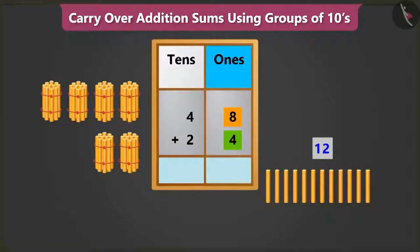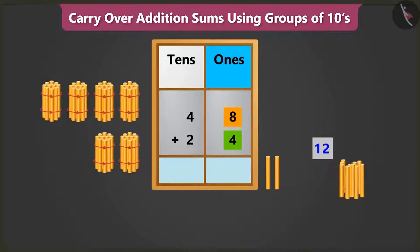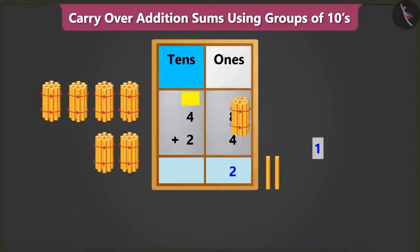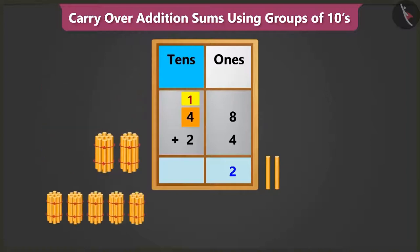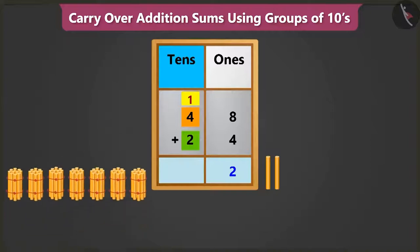Yes. So, from 12 ones, we will write 2 in the ones box and carry over 1 tens in the tens box. Now, when we add 1 and 4, we get 5 and adding 5 and 2, we get 7.